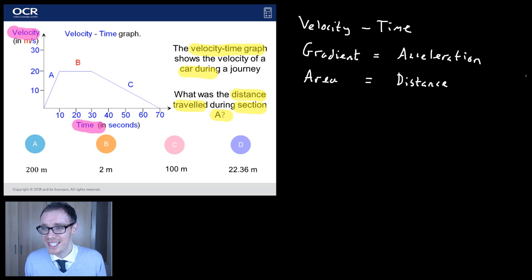All right. So what was the distance travelled in section A? For the distance travelled, we are going to need to know the area underneath the graph in that particular section. So in essence, that section A there, it's a velocity time graph. We want the distance. We want the area underneath that graph.